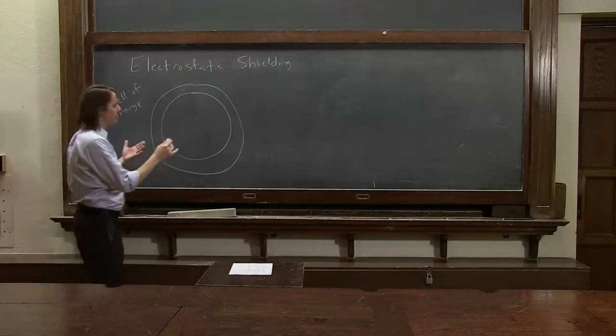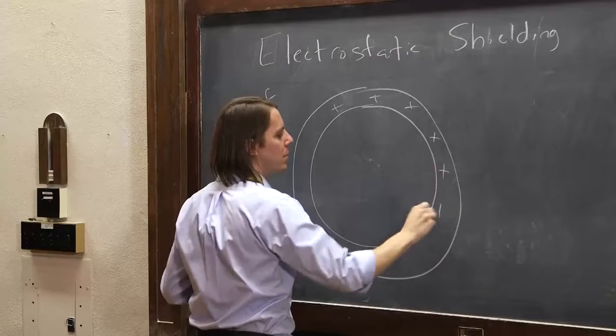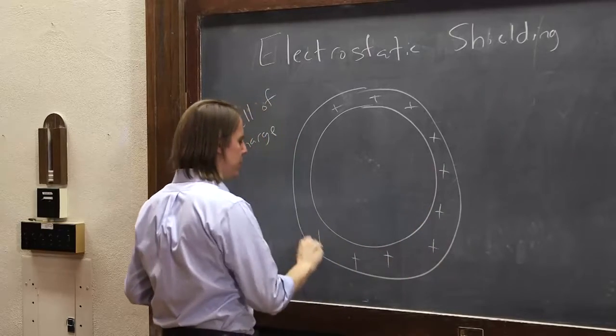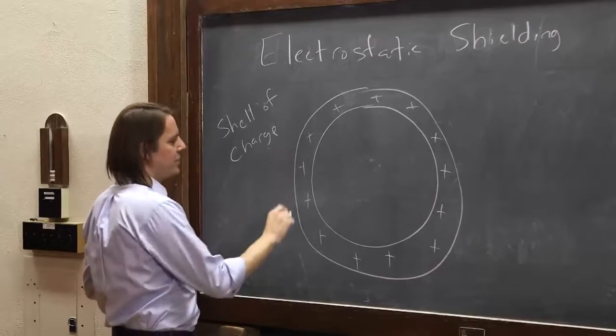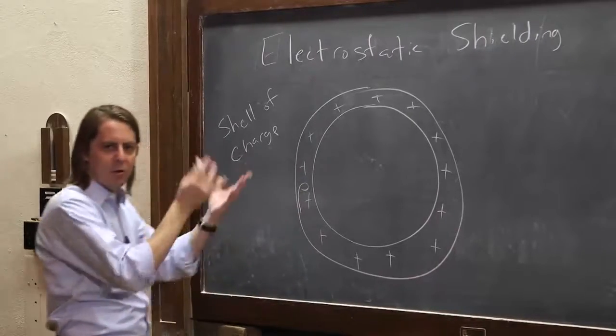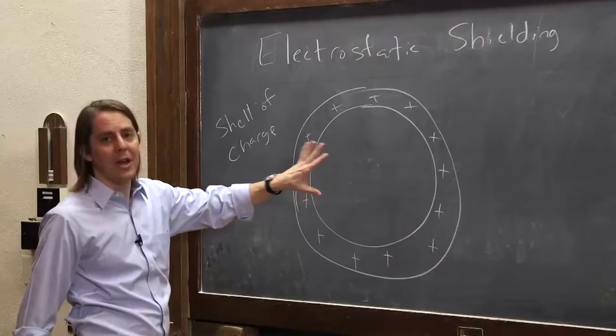This is really a three-dimensional shell, and there are charges throughout this region. They have some charge density rho in this volume of this shell. And the question is, will that keep an electric field out?